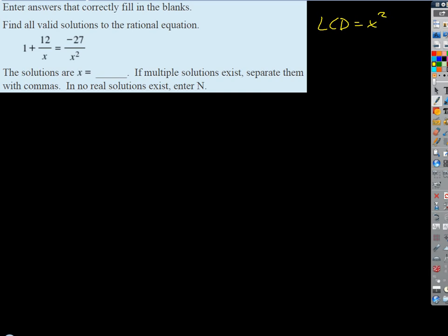Now all we have to do is distribute that through both sides. So we end up with x squared times the quantity 1 plus 12 over x equals negative 27 over x squared times x squared. Remember I have to distribute it through both sides, treat both sides equally, multiply both sides by x squared.